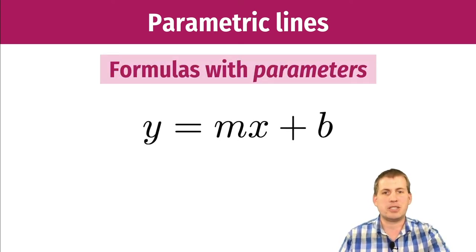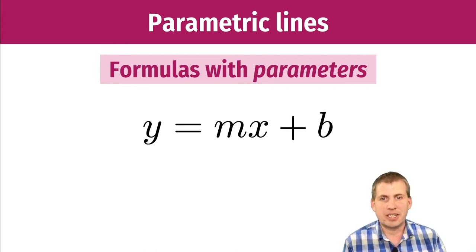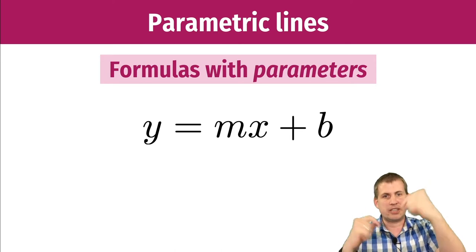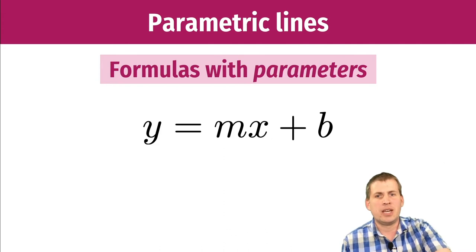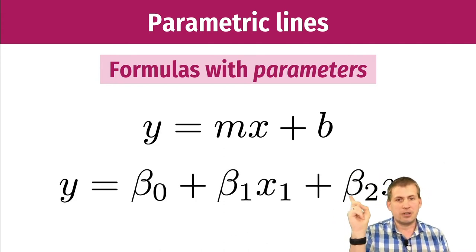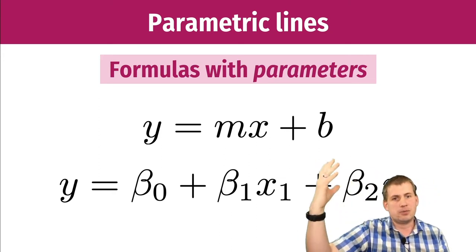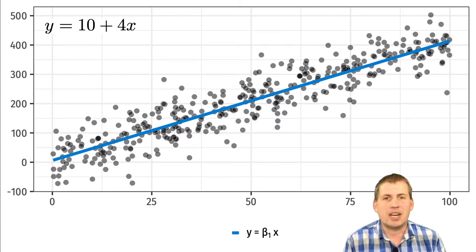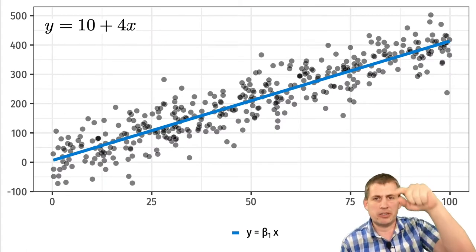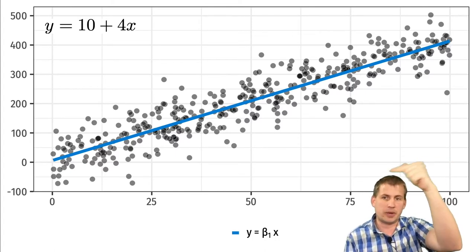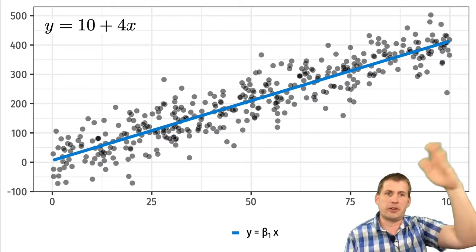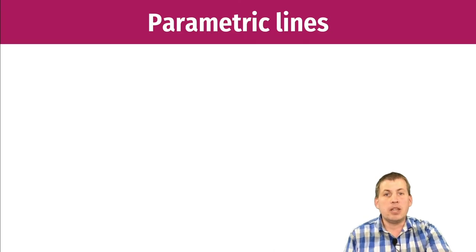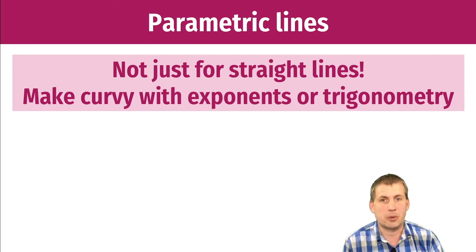Parametric lines might sound like a scary term, but all it means is a formula with parameters — and parameters just means numbers. Going back to eighth-grade algebra: y = mx + b, where m is the slope and b is the y-intercept. Those are parameters. We've seen this with regression equations where you have β₀, β₁, β₂ — those betas are parameters. So if you look at this graph, we can draw a best-fit line like y = 10 + 4x: the y-intercept is at 10 and it goes up 4 for every 1 unit of x. That's a parametric line.